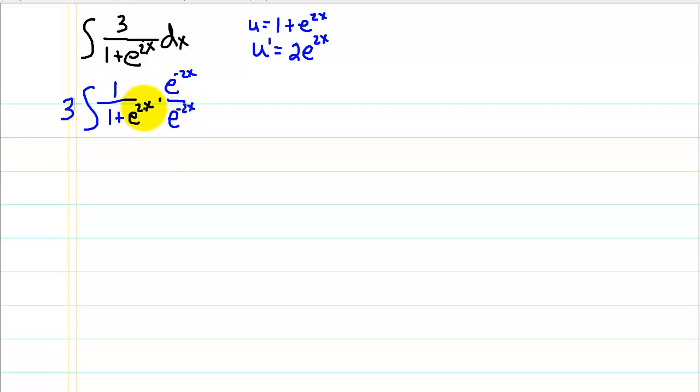And the reason we picked the opposite of this is when I distribute here, we're going to add these exponents and we're going to get e to the 0, which is 1. So if I multiply top and bottom, I get on the top e to the negative 2x, and on the bottom we distribute, so here times 1 we get e to the negative 2x, and here we get e to the 0, which is 1.